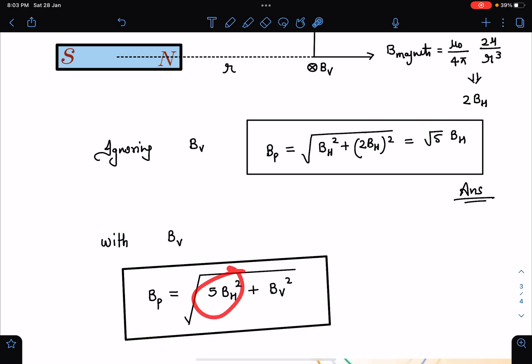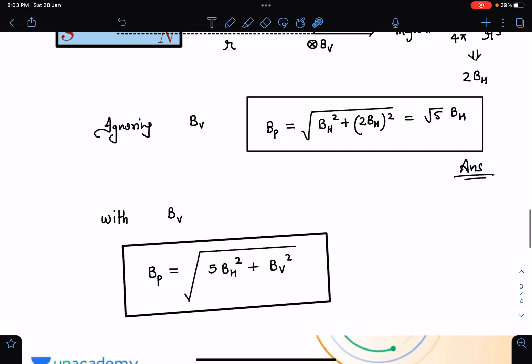So square of this plus BV square. So this should be the correct answer for this particular problem. And if dip angle is given, we know B vertical in terms of BH, which is BH tan delta. So that's how we are going to get the answer in this case.